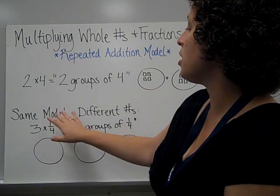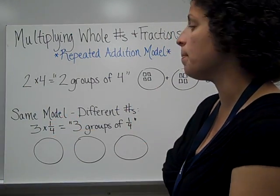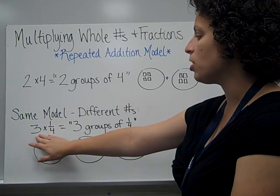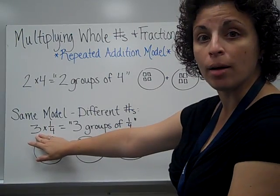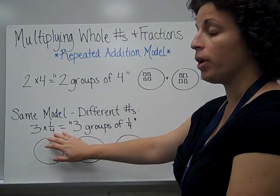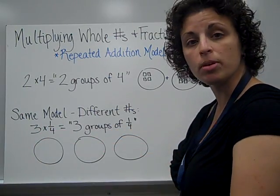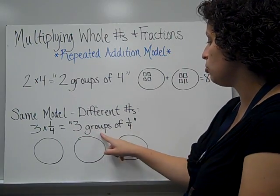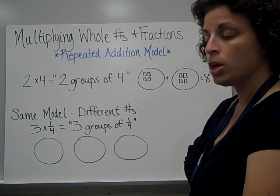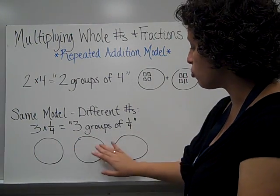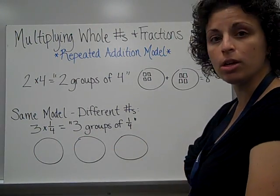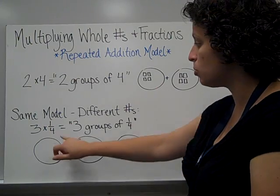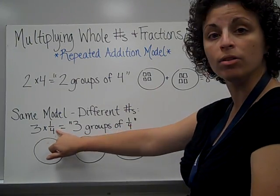We can do the same model, just with different numbers. Here I have our problem 3 times 1 fourth, which can be read as 3 groups of 1 fourth. So I started by drawing my 3 groups, and now inside the 3 groups I need to show 1 fourth.